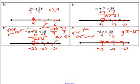And number eight, we're dividing by negative two. So we got to flip that sign and 30 divided by negative two is negative 15.